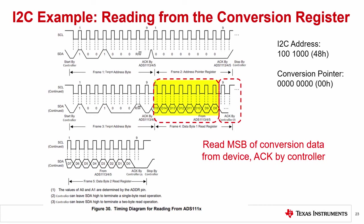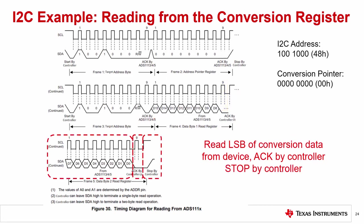Now, we can read the conversion register one byte at a time. First, you read the most significant byte. As a response for reading the data, the controller device pulls down on SDA for an acknowledge. Because the target device is sending data, it is now the controller device that pulls down SDA for an acknowledge. This tells the target device that the data has been received by the controller device. Then follows the read of the least significant byte, and then another acknowledge from the controller. Finally, the controller sends a stop to end the I2C communication.